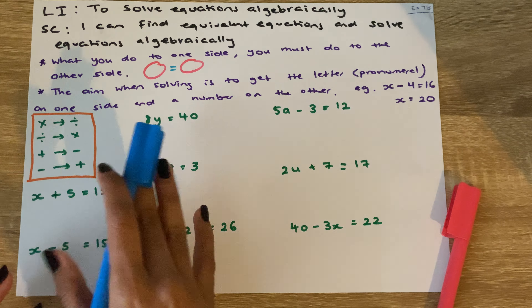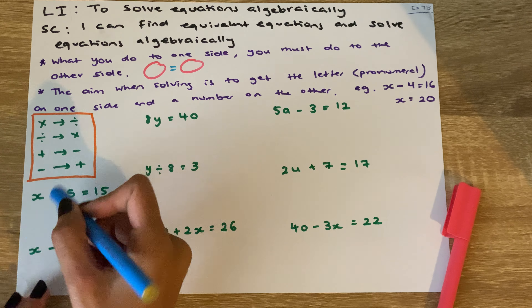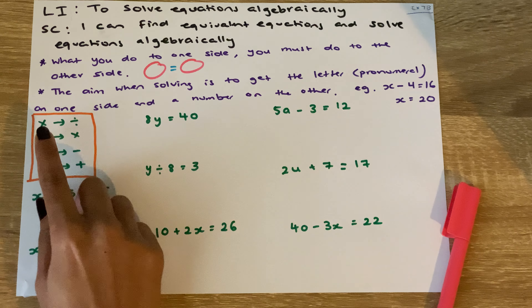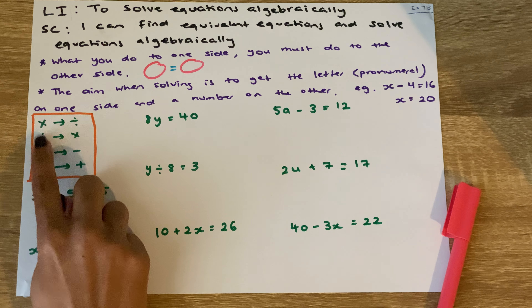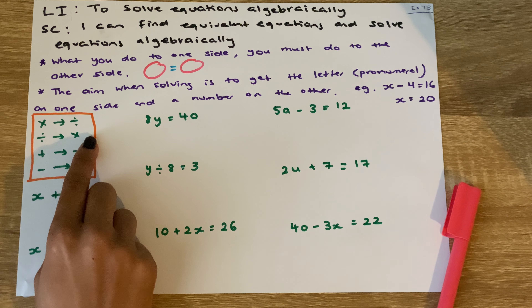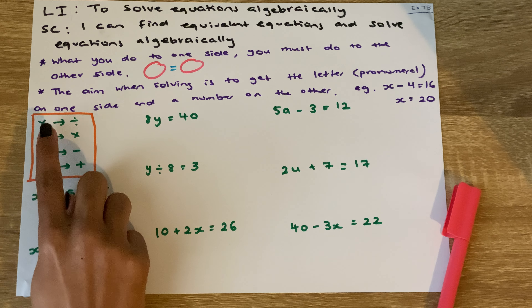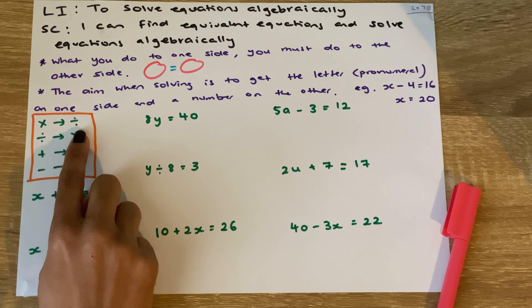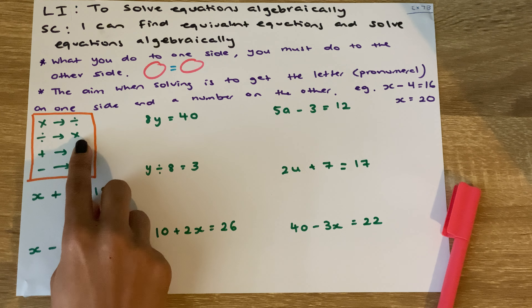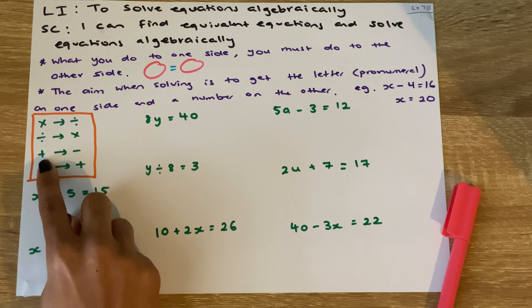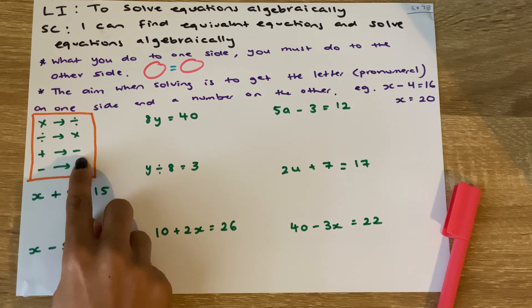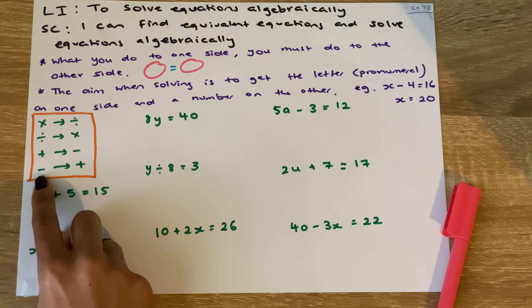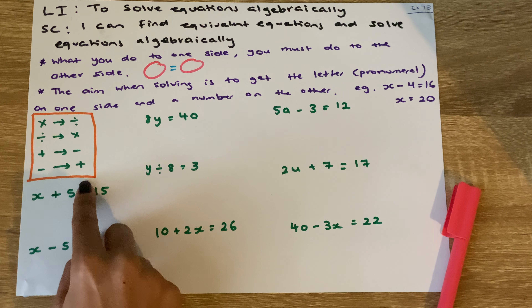First things first, what we need to know is our opposites. The opposite of timesing is dividing, the opposite of dividing is timesing, the opposite of adding is subtracting, and the opposite of subtracting is adding.